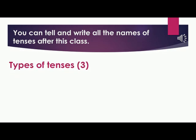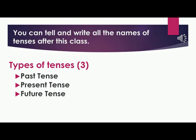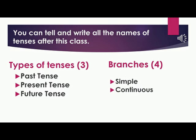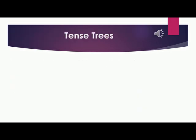Mainly, there are three types of tenses. They are past tense, present tense and future tense. These tenses have four branches each and they are simple, continuous, perfect and perfect continuous. Look at these tense trees.